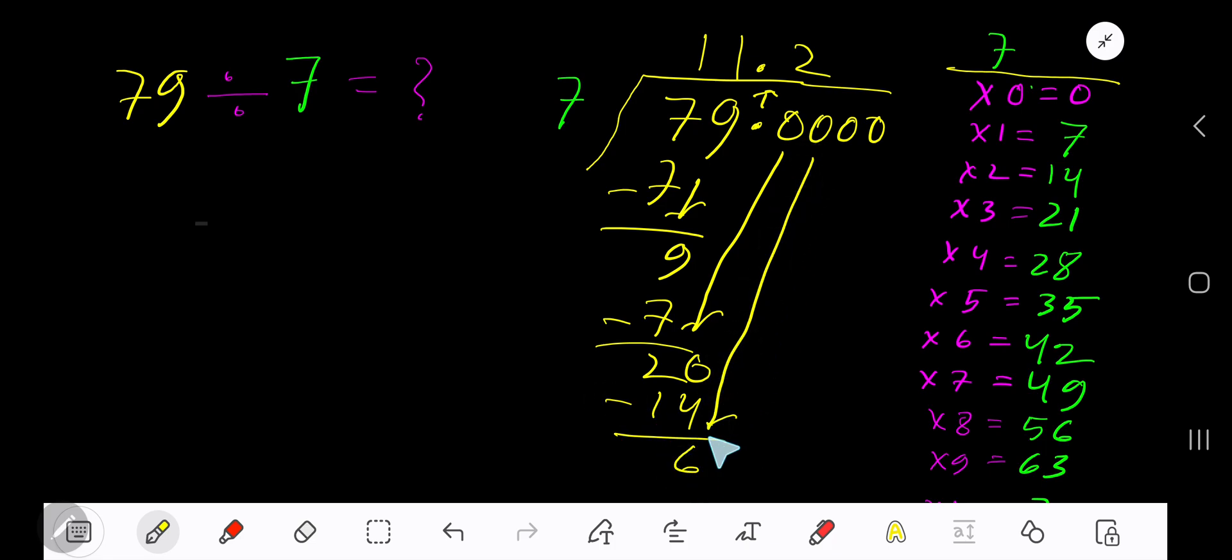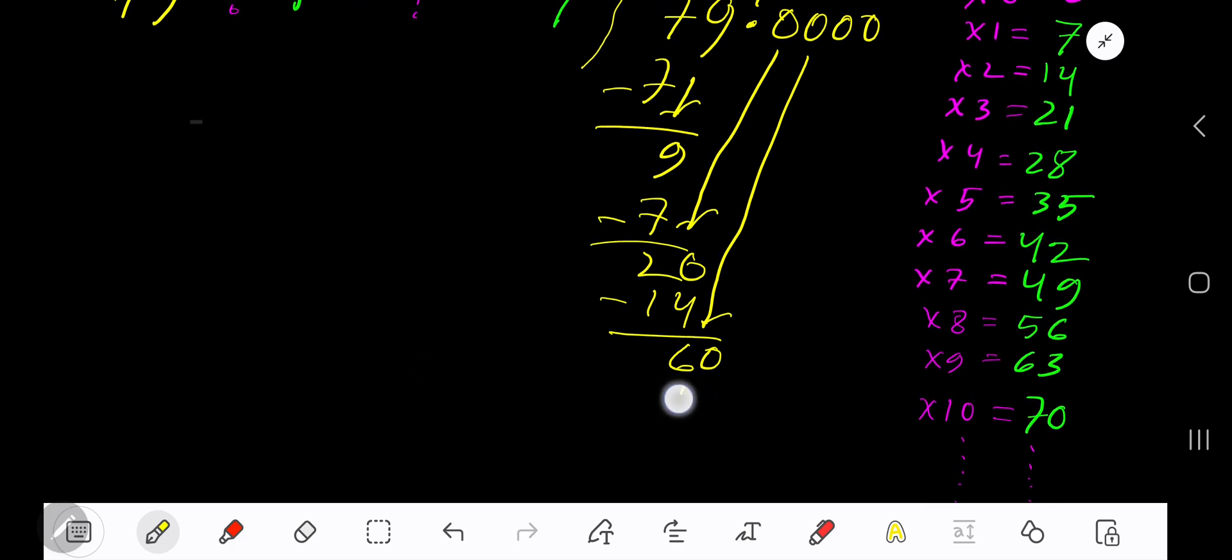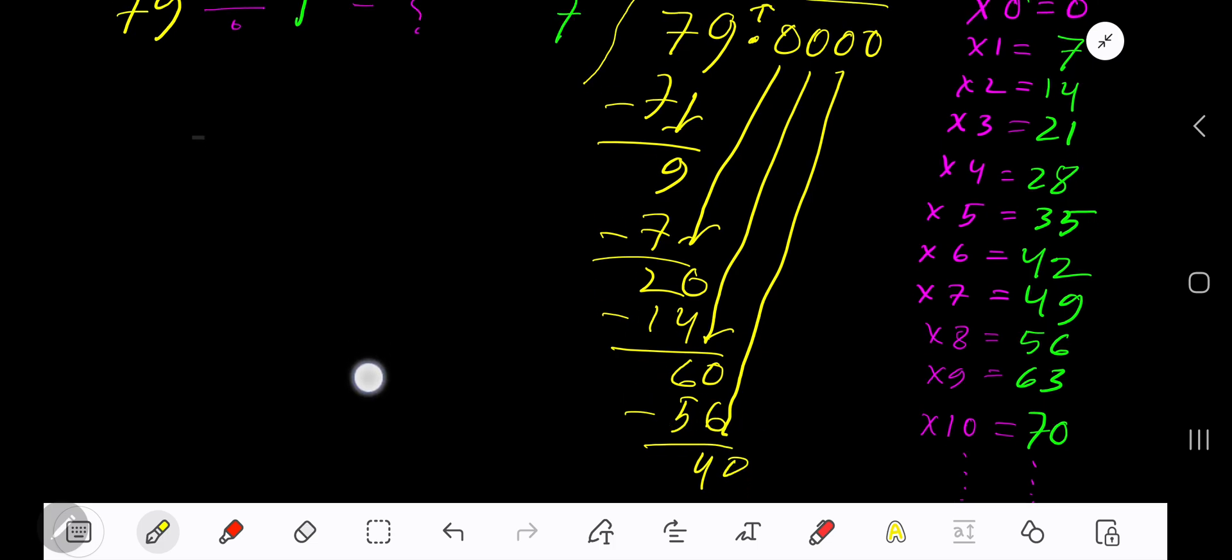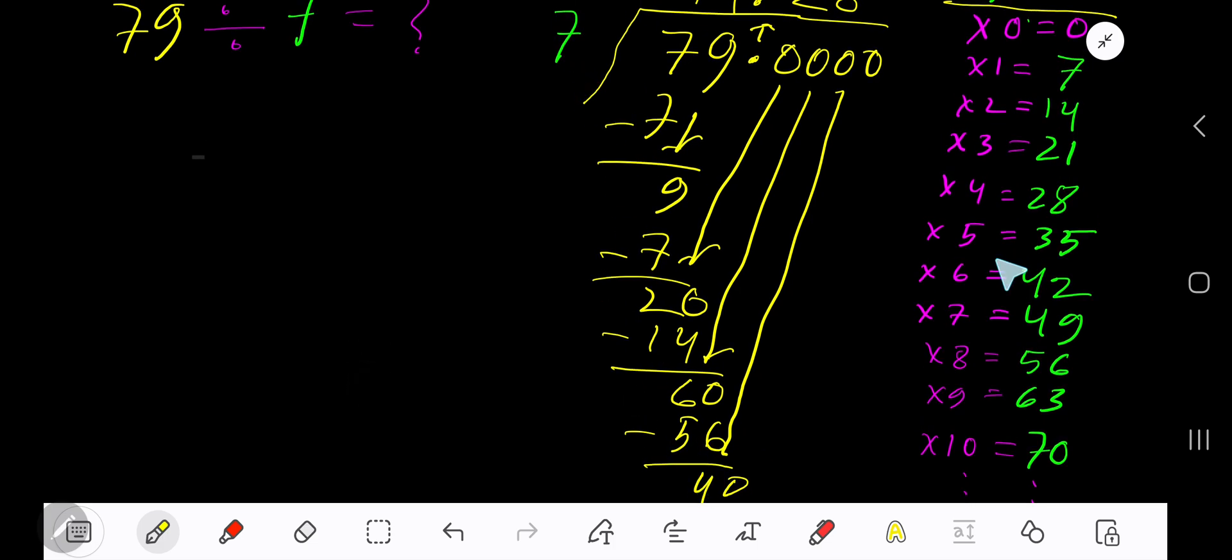You're getting 6. Bring down another zero—60. 7 goes into 60 how many times? 8 times. 8 times 7 is 56. Subtract to get 4. Bring down another 0—40. 7 goes into 40 how many times? 5 times.